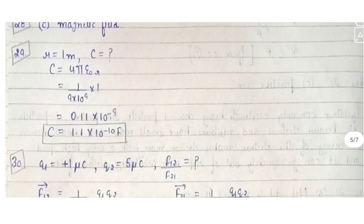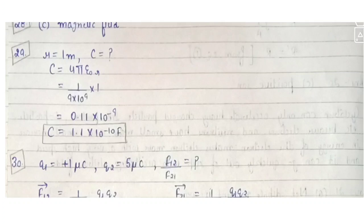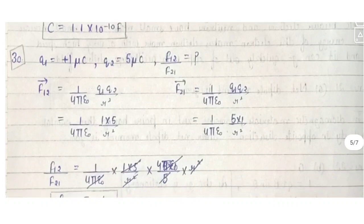Question 29: the capacitance of a spherical conductor with radius 1 meter. Practice this numerical — the formula is C = 4πε₀r. Substitute the values to get the answer.